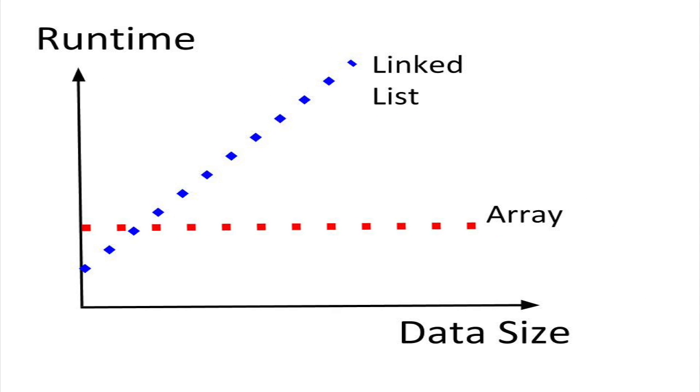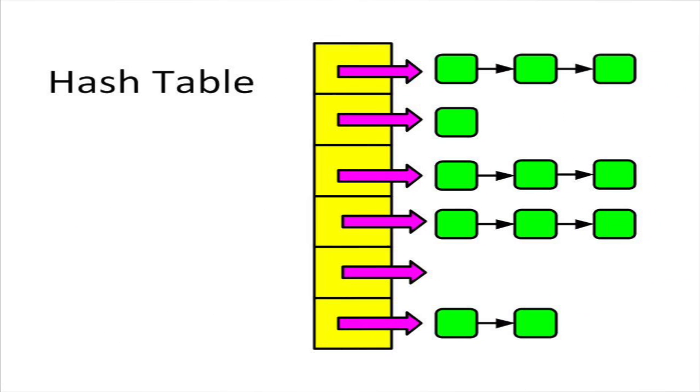So you can see that a linked list is horribly slow compared to an array. With a hash table, we get a compromise between the runtimes of an array and a linked list. To maximize the efficiency of a hash table, we need a good hash function.